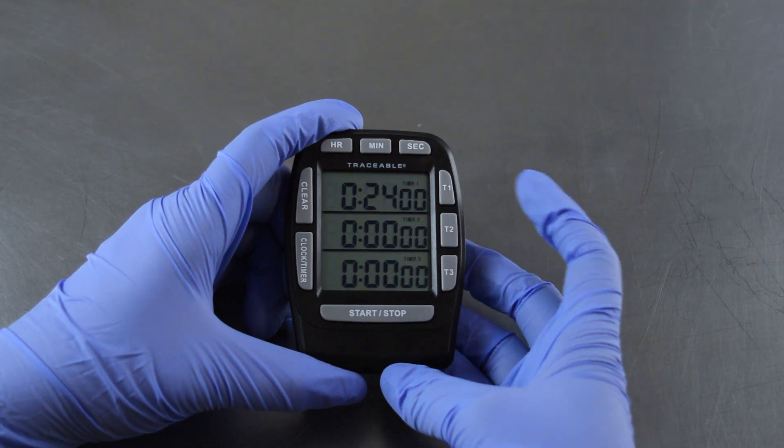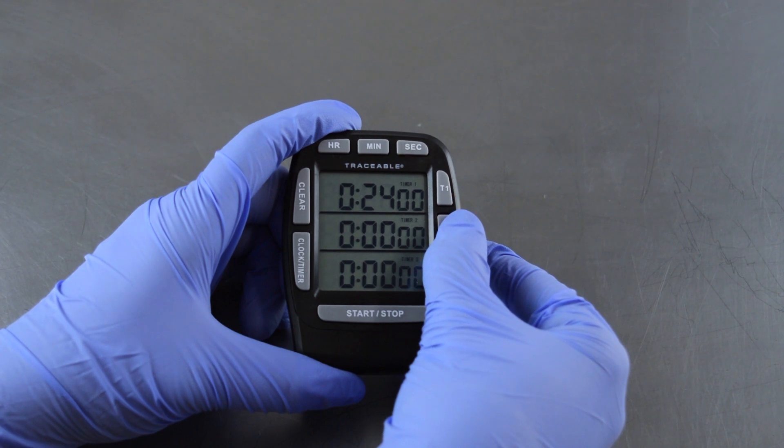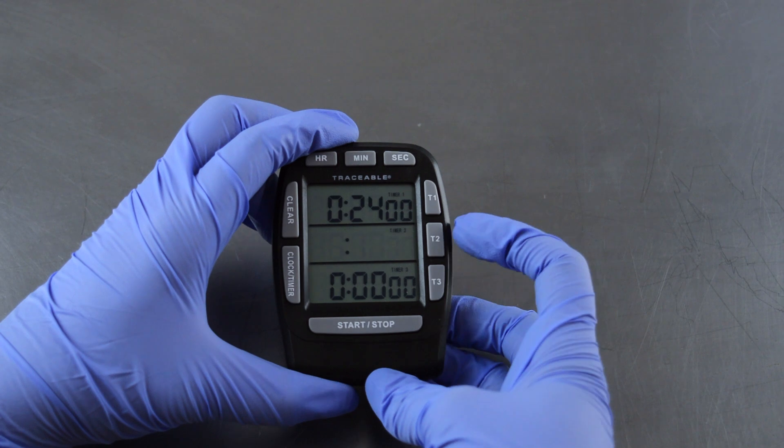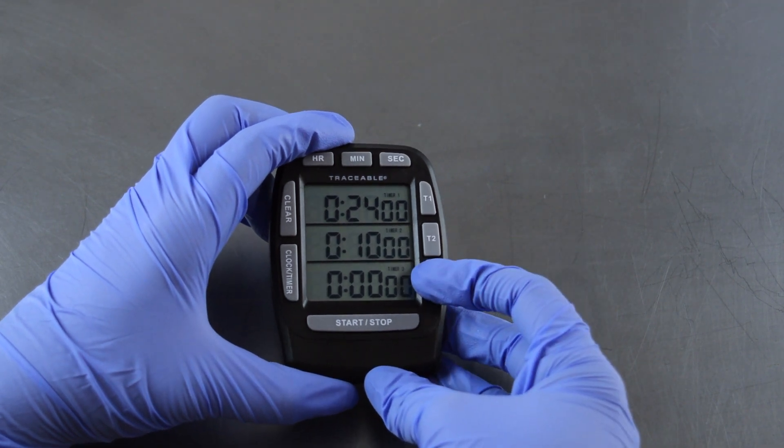To set timers 2 and 3, repeat the steps again. Hold down on T2 until the numbers flash and then set the appropriate time. Repeat this process again for T3.